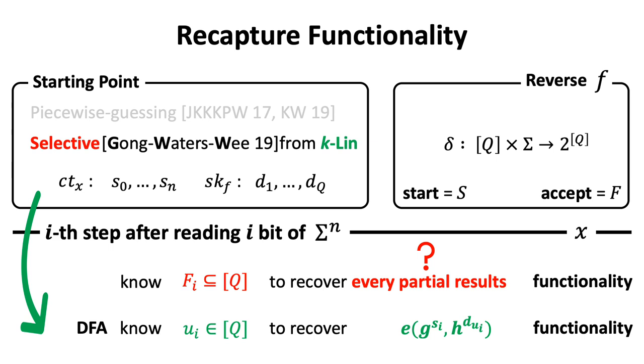the machine reaches state ui after reading i bits of x. The partial result is defined as this. Basically, we multiply the randomness SI for step i with randomness DUI for state ui in the exponent.